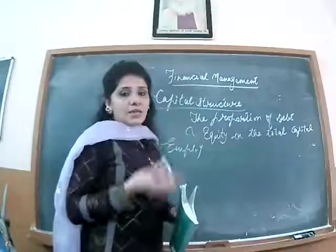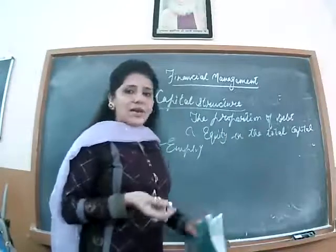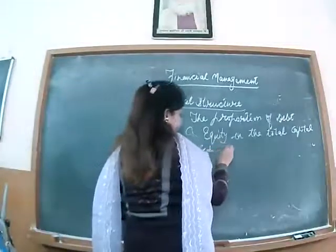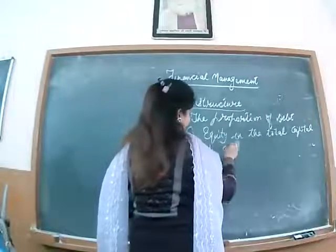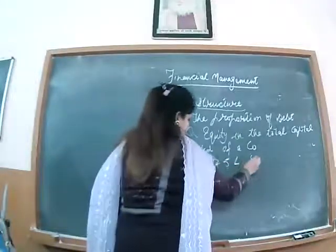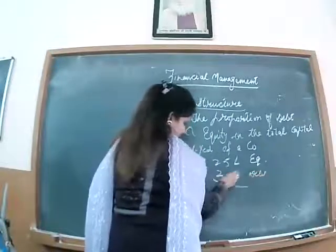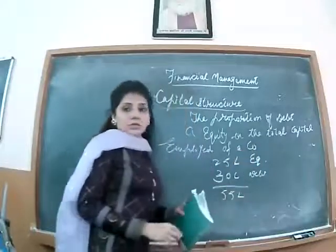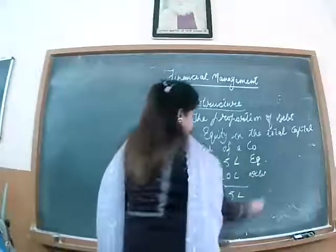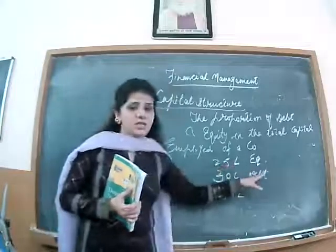In a company, how much money we put in equity and how much of our long-term debt — means borrowing — which is the total capital employed of a company. For example, 25 billion equity and 20 or 30 billion debt is the capital structure of the company. It is very important here: how much debt and how much equity a company should raise.